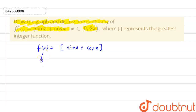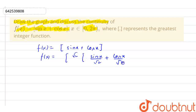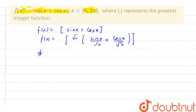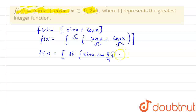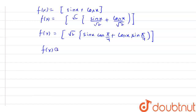Let's solve it a little bit. If I multiply and divide by √2, then I can write √2 times (sin x / √2 + cos x / √2), all inside the greatest integer. Now, using sin x · cos(π/4) + cos x · sin(π/4), the value of the function becomes greatest integer of √2 sin(x + π/4).